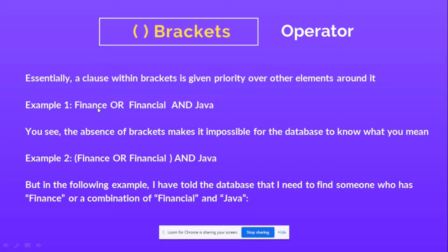Brackets are used in two instances: first, whenever we use an OR operator between two keywords; and second, to give priority between elements. For example, 'finance OR financial AND java' — the database won't know the intended grouping. But when we use brackets as '(finance OR financial) AND java', the database understands to search for finance or financial first, and then the keyword java. Always use brackets with OR to set proper search priority.